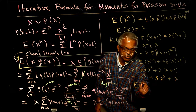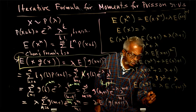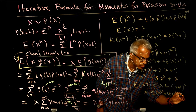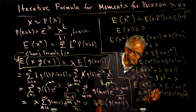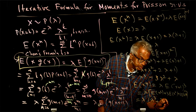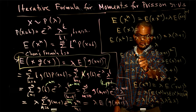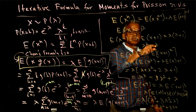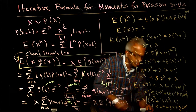I will do one more: the expected value of x^4 will be lambda multiplied by the expected value of (x+1)^3. That is lambda multiplied by the expected value of x^3 plus 3x^2 plus 3x plus 1. Substituting and simplifying, if you put everything together you will get lambda^4 and so on.